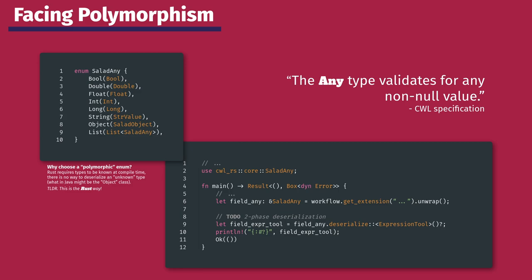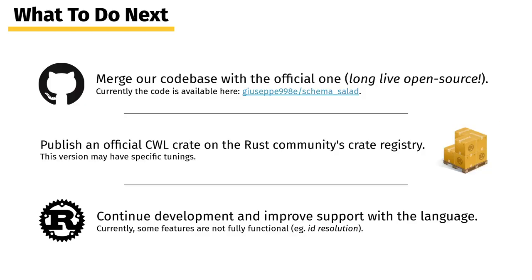However, this leads to two problems. The memory on the heap must be cloned because we cannot replace the field with the new type, and the IRI resolution on this object cannot be done because we have lost the supporting data from the first deserialization. Our next goals are to merge our codebase with the official one — currently the code is available on a personal GitHub repository — then publish an official Common Workflow Language crate on the Rust community's crate registry, and in the meantime continue development by fixing features that are not yet fully functional, for example IRI resolution.